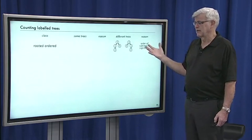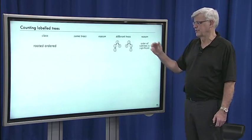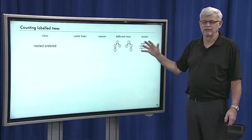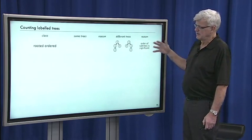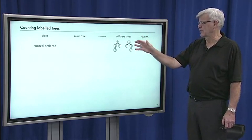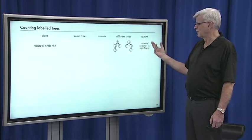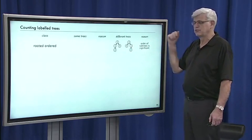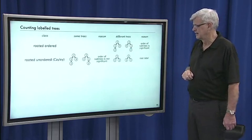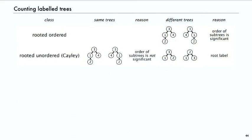Getting through the terminology before we go to specific tree types: when we talk about rooted ordered labeled trees, it means the order of the subtrees is significant, so we consider two differently-ordered trees to be different. If we talk about unordered trees, we consider those two trees to be the same — the order is not significant. But if the root is labeled differently, we consider those to be different trees. Those are known as Cayley trees.